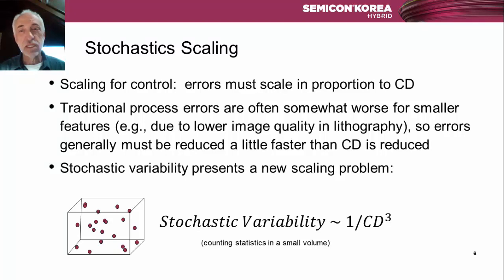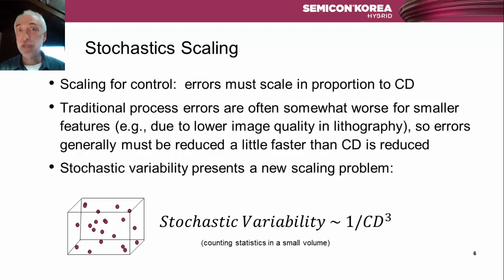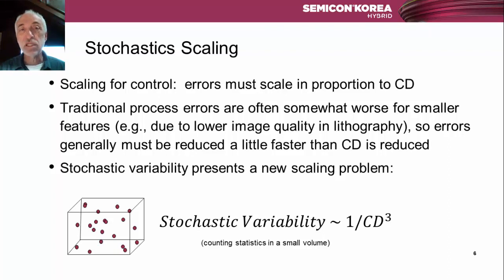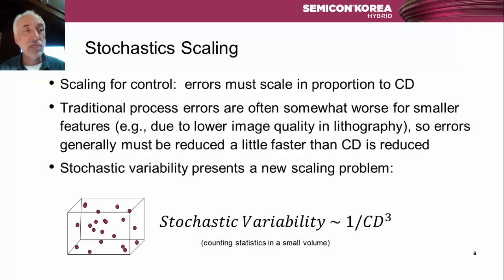Think about that: if the CD shrinks by a factor of 0.7 — the typical historical node-to-node shrink — the stochastic variability increases by 3x. This is a major, major problem, and it makes every single technology node much, much more challenging than the previous node.